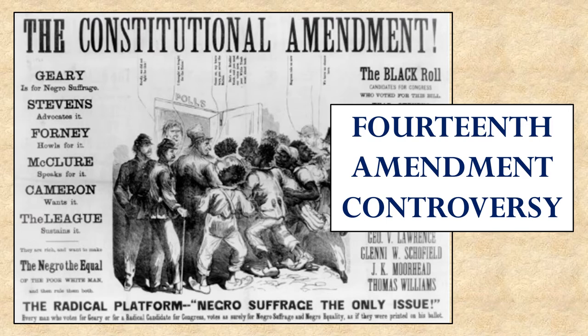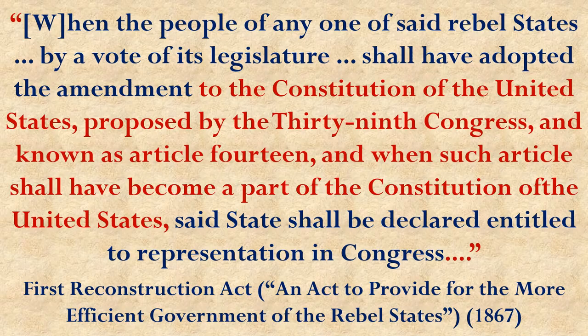The proposed 14th Amendment was deeply offensive to some people in the South. Even some who favored treating slaves better saw it as an overreach of national power, feeling states should decide more things for themselves. Southern states were particularly concerned it would enable Blacks to vote — both because they believed Blacks weren't capable of casting reasonable votes and because in some places Blacks outnumbered whites, raising fears they would take power and seek revenge upon the white population.